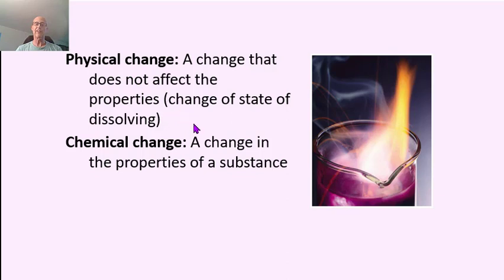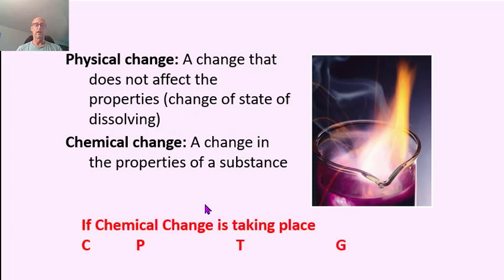Physical changes are easiest to track because we're familiar with change of state. Chemical changes are a little harder to see because I can't see whether the atoms are making or breaking chemical bonds. So I'm going to give you a mnemonic to watch out for if a chemical change is taking place: CPTG. C is for color. Anytime you see a color change, it's probably chemical change.